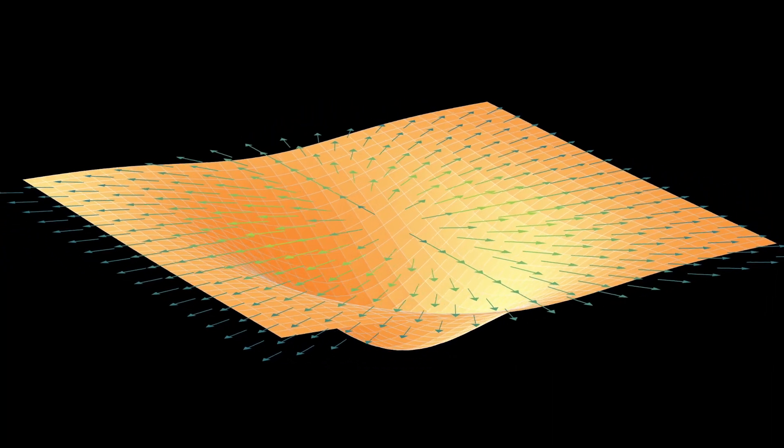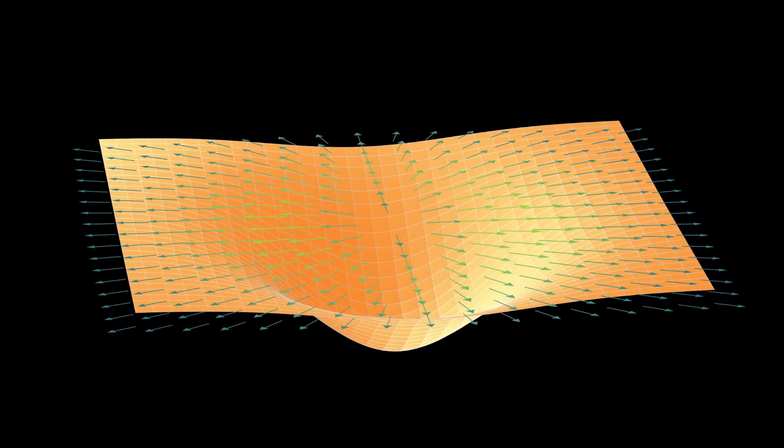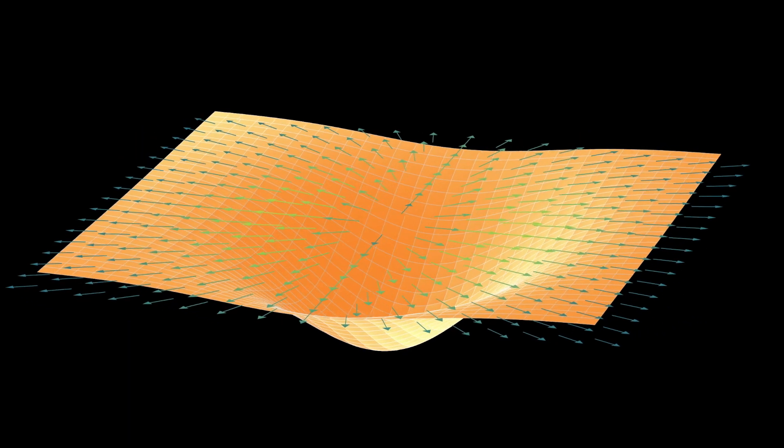But why do we take that as a given? Why do we think the gradient is the direction of steepest ascent? To convince ourselves of that, we're going to take a few minutes to talk about directional derivatives.